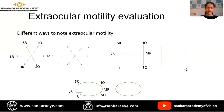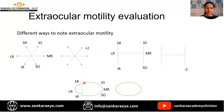It is important to check both ductions and versions because examining ductions helps us differentiate an apparent underaction arising from the phenomenon of inhibition of the contralateral antagonist from a true underaction. However, ductions may not show a minimal muscle weakness that a patient can overcome, which versions will pick up. Any muscle overaction is denoted with a plus sign and the grade of overaction. Any muscle underaction is noted with a minus sign followed by a numerical value for the grade of underaction. Muscle underaction can also be noted by shading the field of gaze in which a particular muscle acts. No matter what notation is used, a particular field will always represent that particular muscle — for example, this field will always represent the inferior oblique.